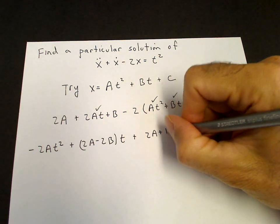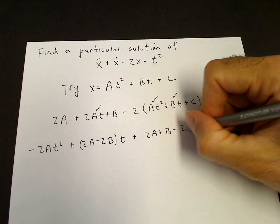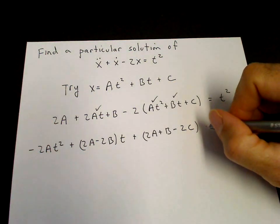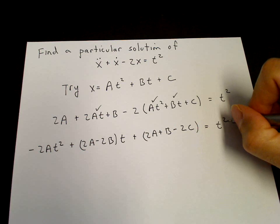2A plus B minus 2C as the constant term. And that's equal to t squared.